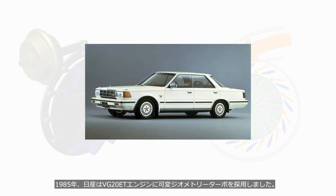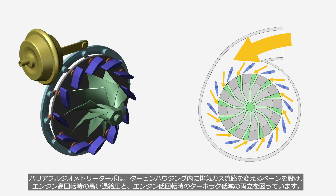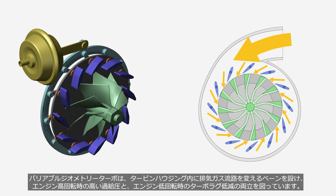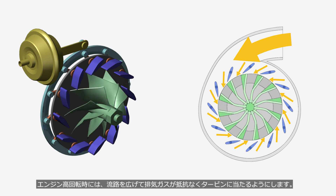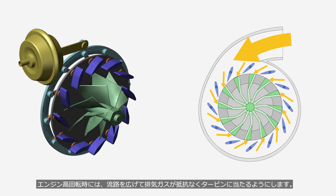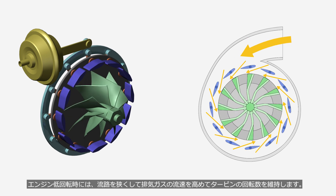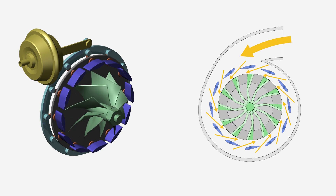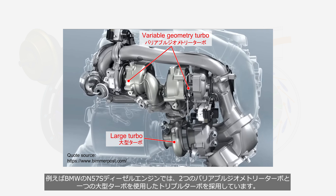In 1985, Nissan adopted a variable geometry turbocharger for the VG20ET engine. A variable geometry turbo achieves a balance between high boost pressure at high engine speeds and reducing turbo lag at low engine speeds, by altering the exhaust gas flow path using vanes in the turbine housing. At high engine speeds, the flow path is widened to allow exhaust gases to smoothly impact the turbine wheel. At low engine speeds, the flow path is narrowed to increase the velocity of exhaust gases, maintaining turbine wheel rotational speed. In recent years, car manufacturers have been combining turbos of different sizes and variable geometry turbos in various ways — for example, the BMW N57S diesel engine employs a triple turbo setup using two variable geometry turbos and one large turbo.